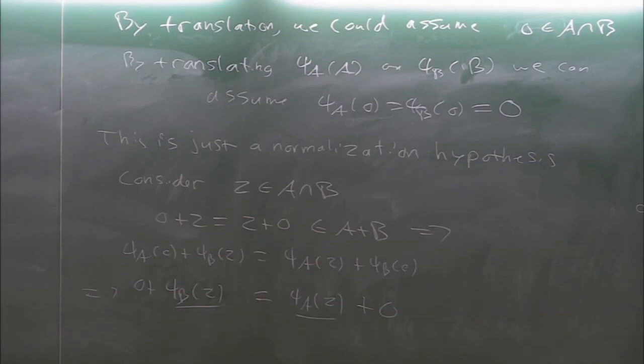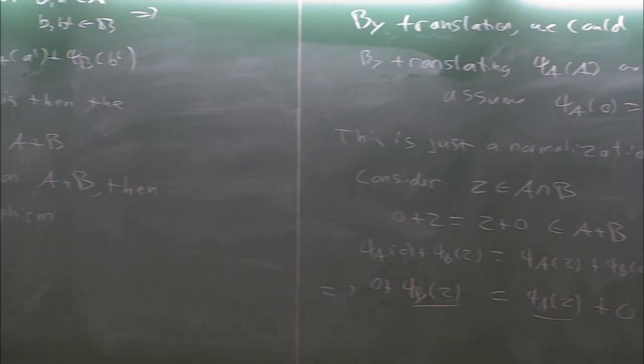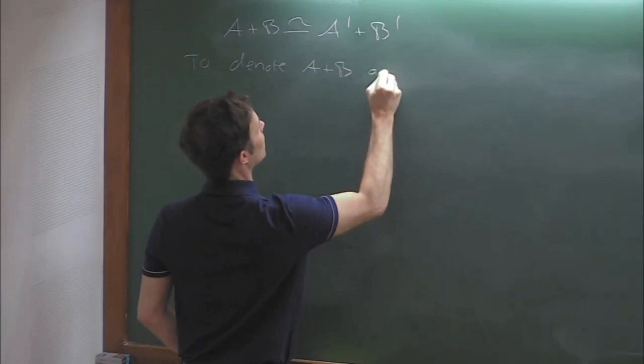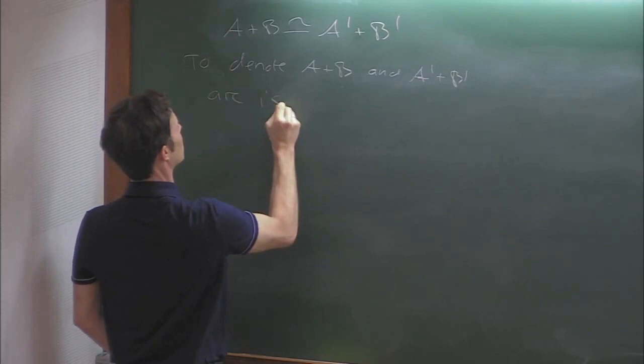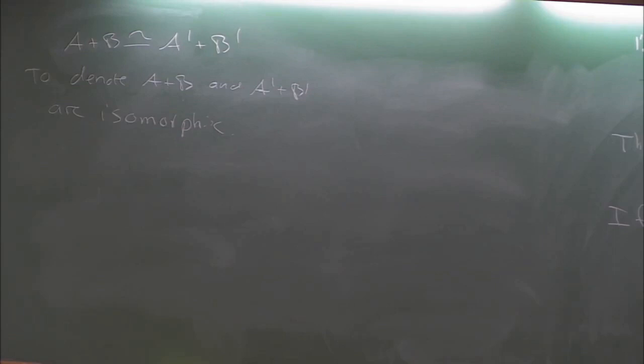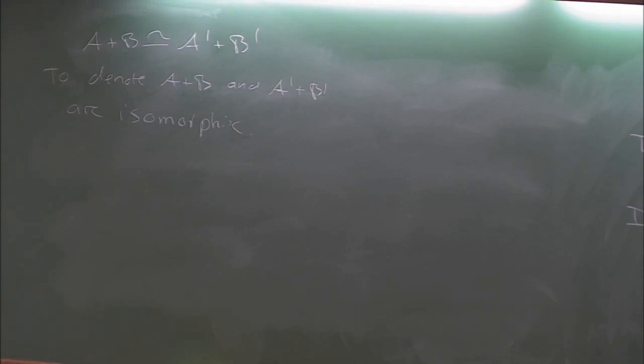I might write something like A plus B isomorphic to A prime plus B prime - that simply means there's an isomorphism between these two sumsets. It's pretty standard notation extended to sumsets. The other part of this talk is about higher dimensions, so let's talk about the dimension of a set or a sumset.